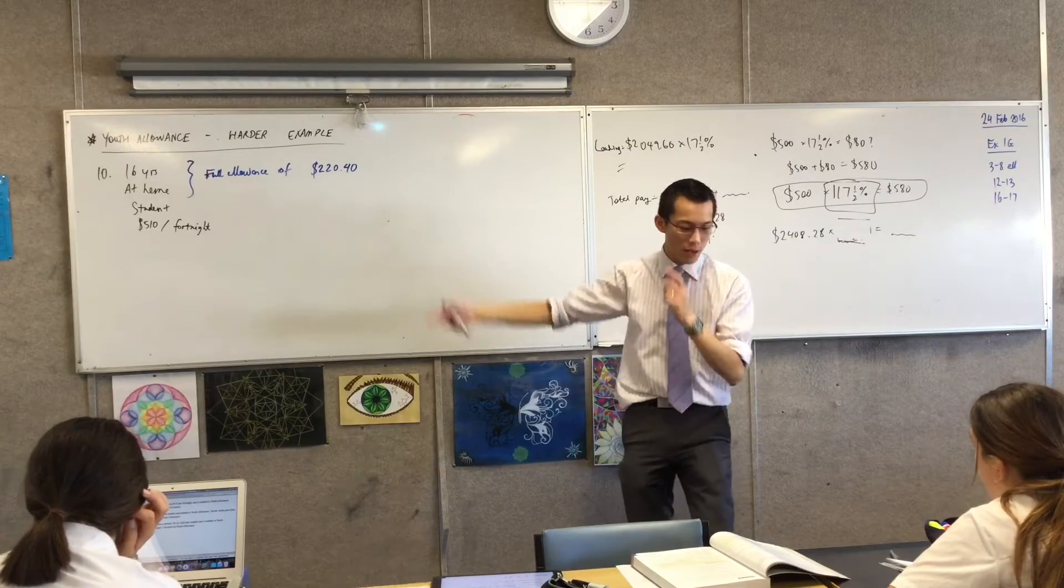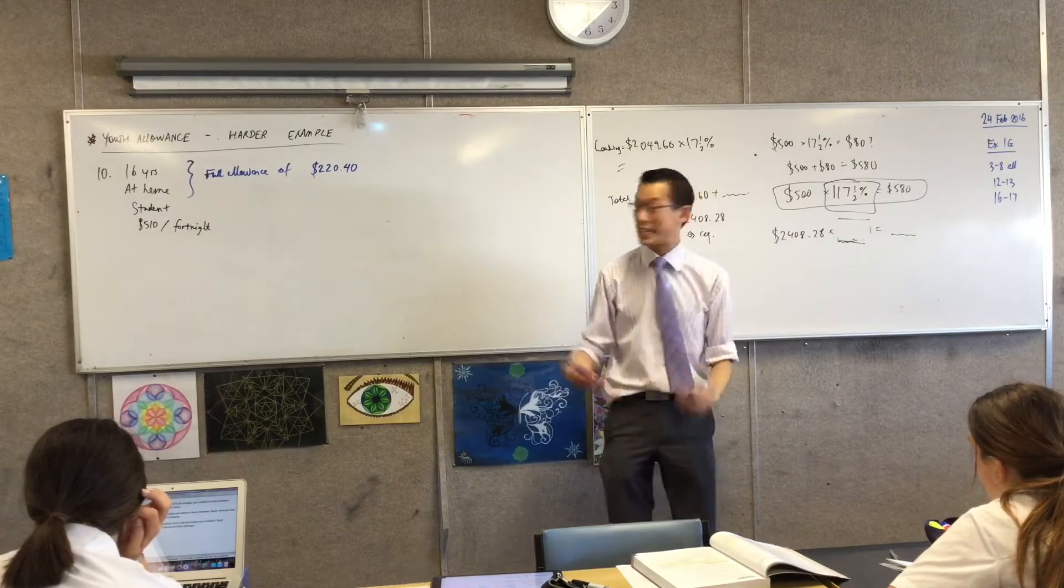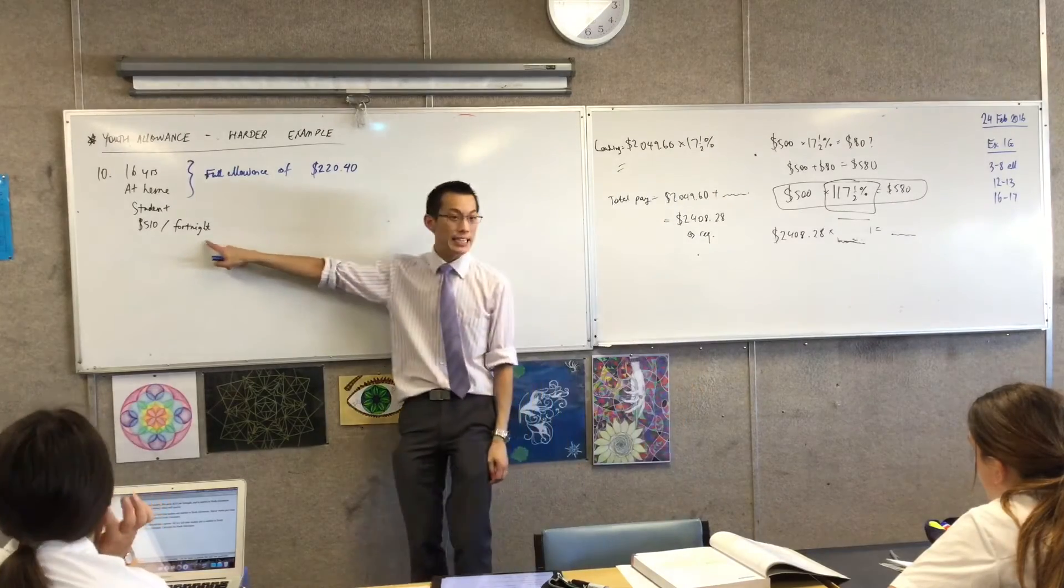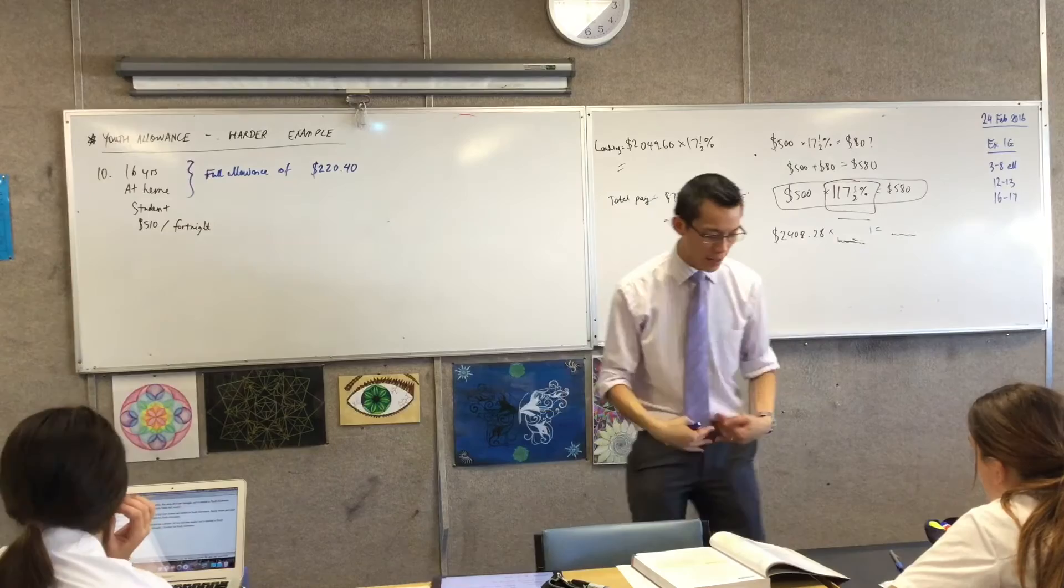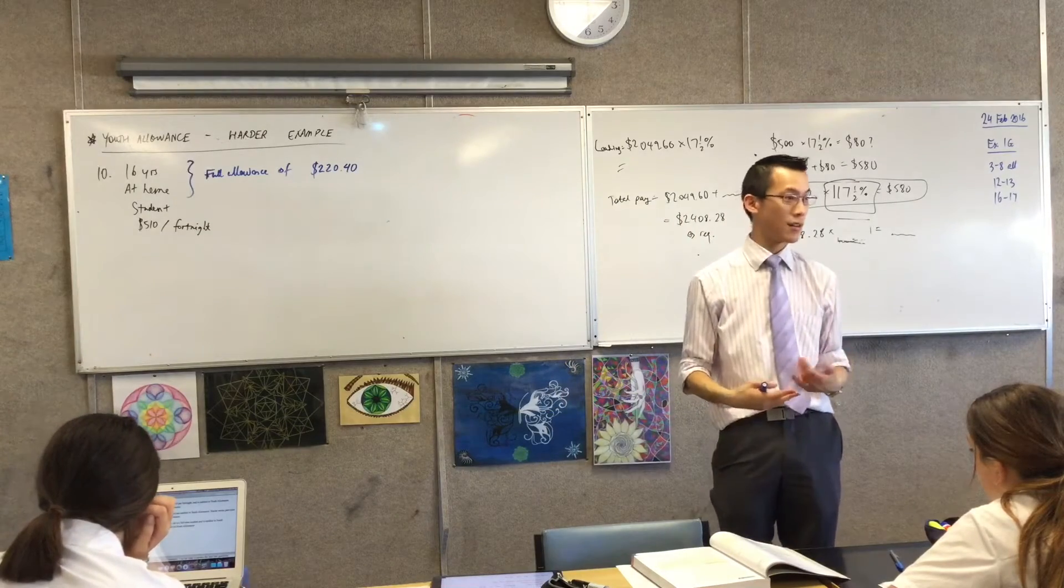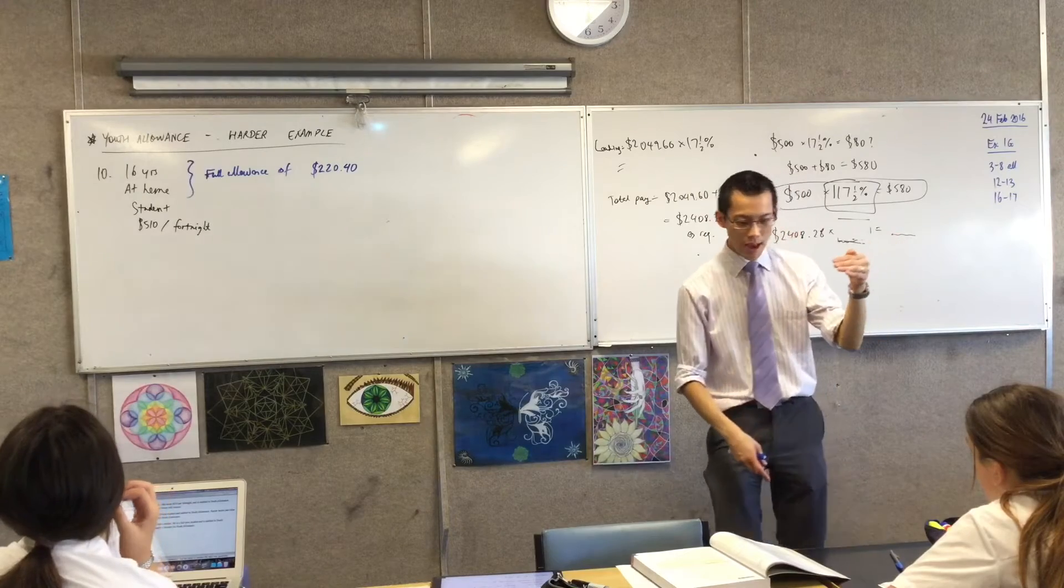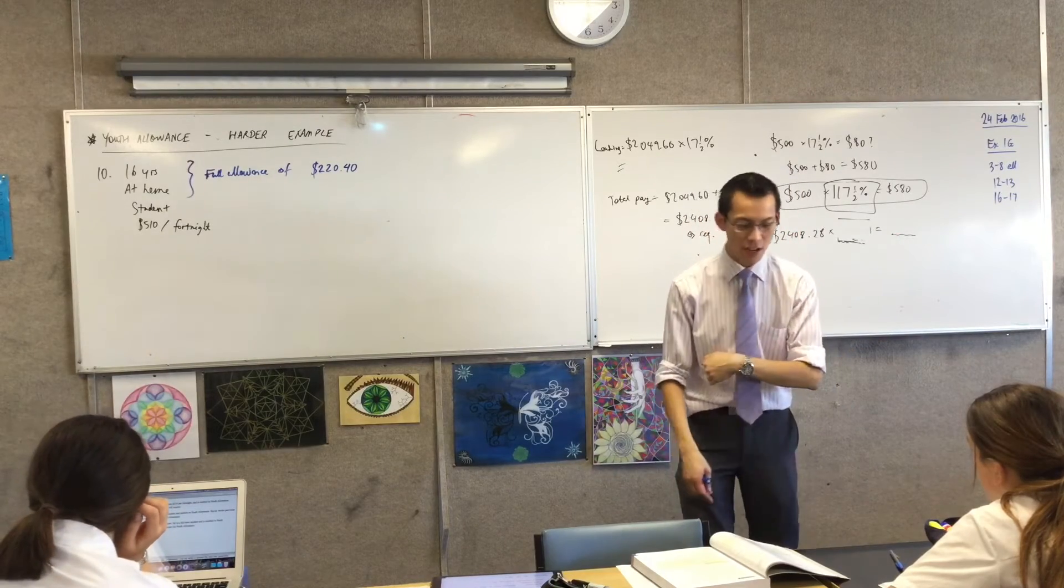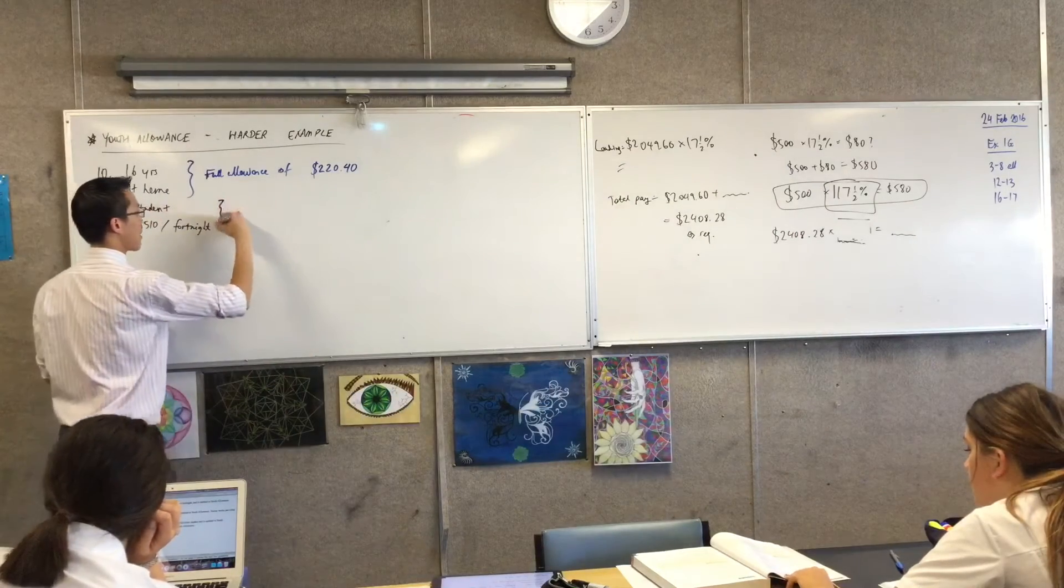It looks to me like it's the very first row. Do you see that? Like, you know how each row, it's kind of got two rows in it for student or unemployed? She's a student, okay. So therefore she has a threshold of $400 to get the full allowance. She's quite clearly over that threshold, okay. But she's also under the threshold for getting a part allowance. So she's going to get a part allowance.